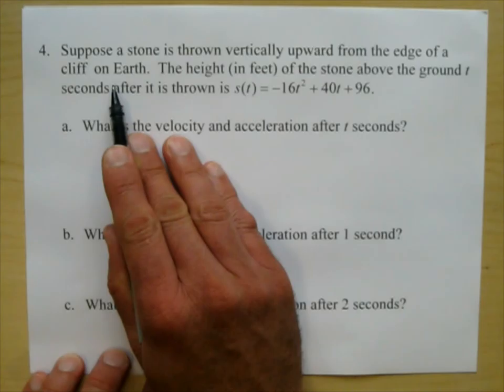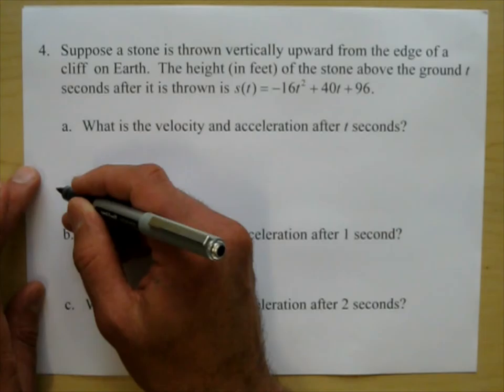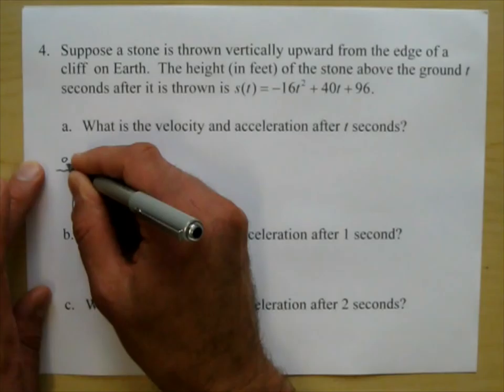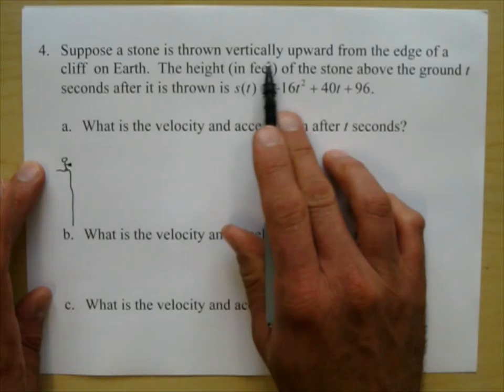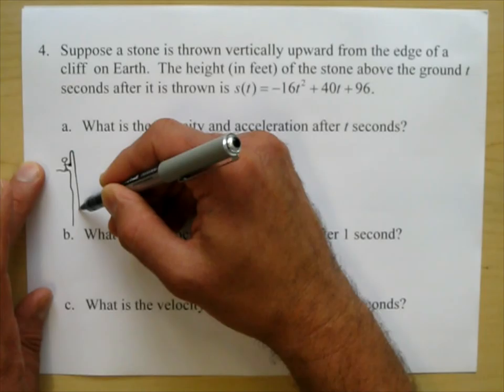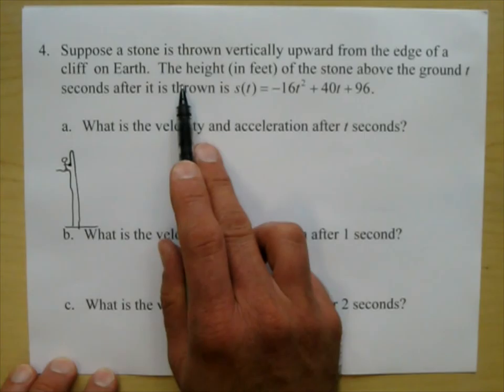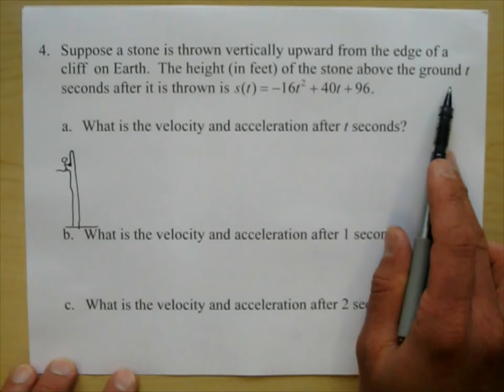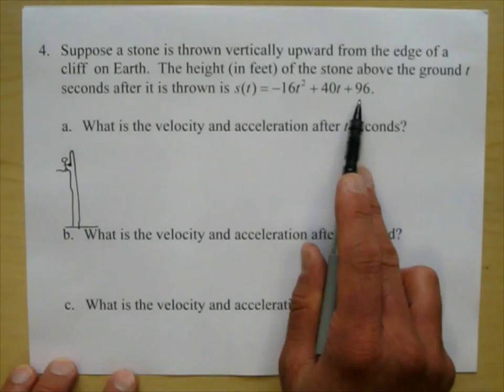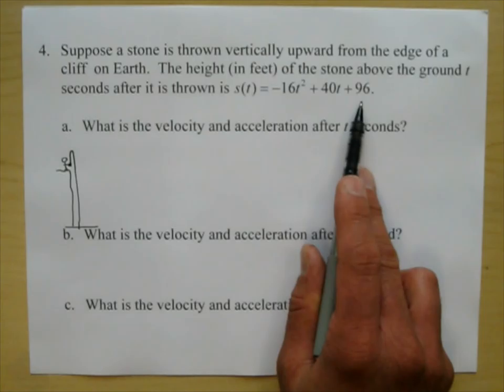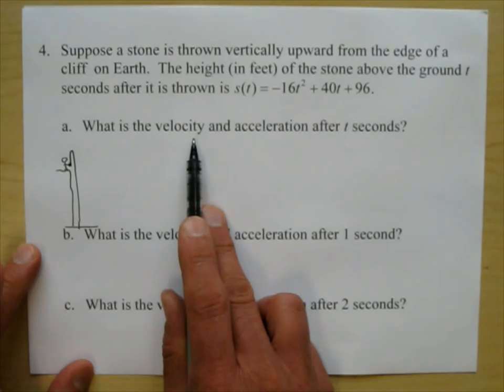Suppose a stone is thrown vertically upward from the edge of a cliff on Earth. The height in feet of the stone above the ground, t seconds after it is thrown, is given by this function. This is the height function — you could also call it the position function.